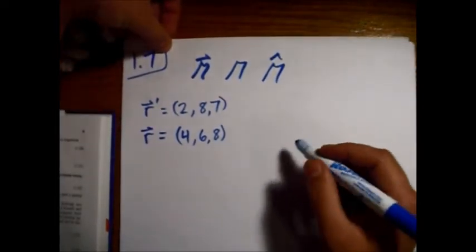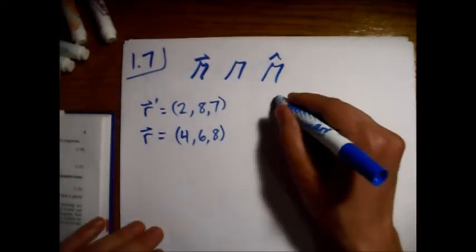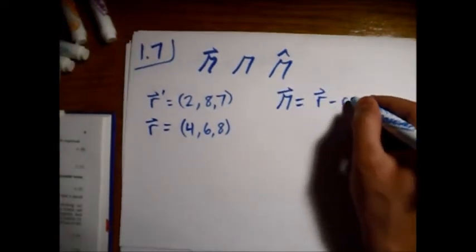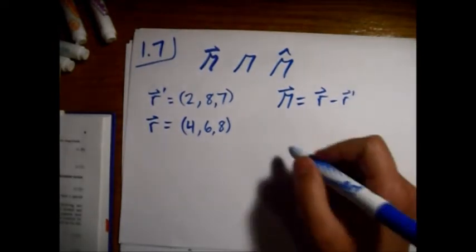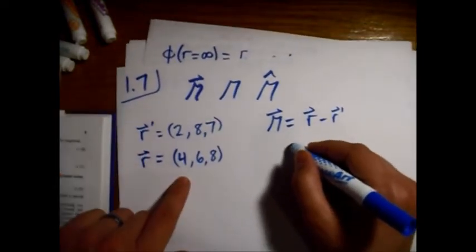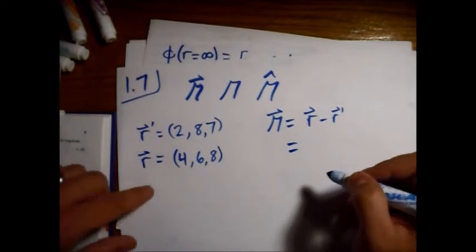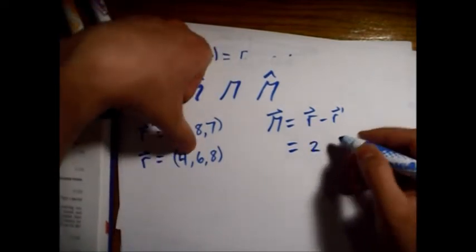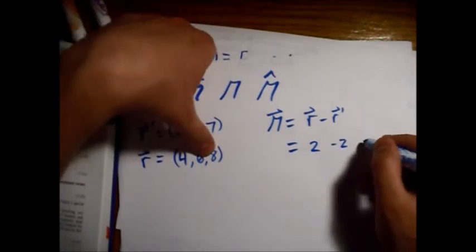Alright, so this is just defined by R minus R prime like that. So we just take R minus R prime, 4 minus 2 is 2, 6 minus 8 is minus 2, 8 minus 7 is 1.